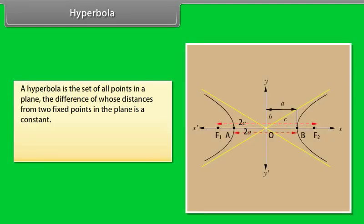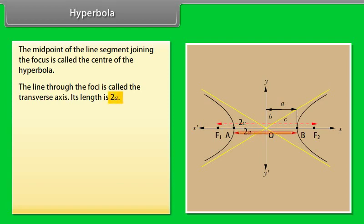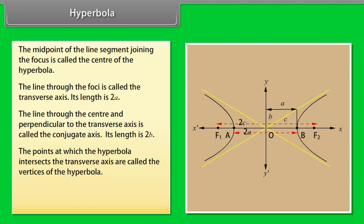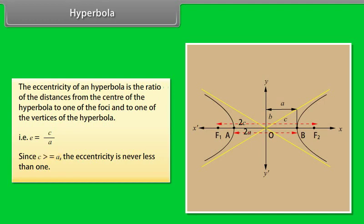Hyperbola. A hyperbola is the set of all points in a plane, the difference of whose distances from two fixed points in the plane is a constant. The two fixed points are called the foci. The midpoint of the line segment joining the foci is the center. The line through the foci is called the transverse axis, with length 2a. The line through the center perpendicular to the transverse axis is the conjugate axis, with length 2b. The points where the hyperbola intersects the transverse axis are the vertices. The distance between the foci is 2c. The eccentricity E = c/a, and since c ≥ a, the eccentricity is never less than 1.